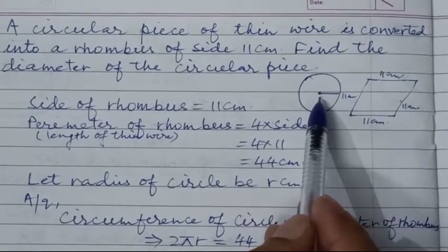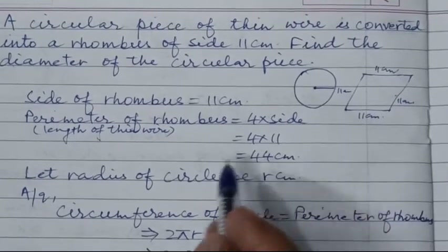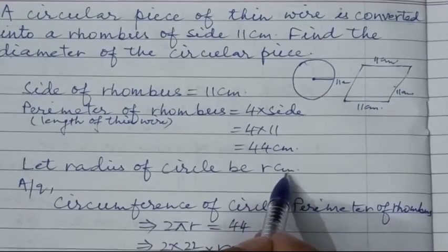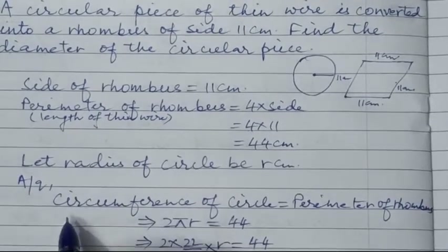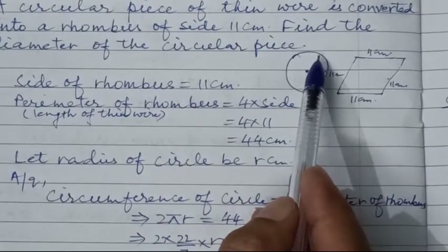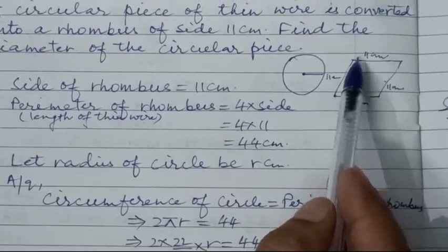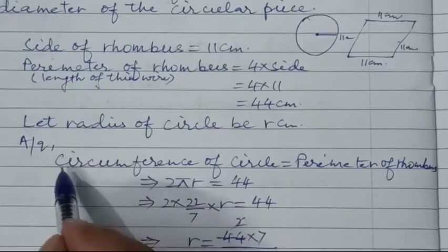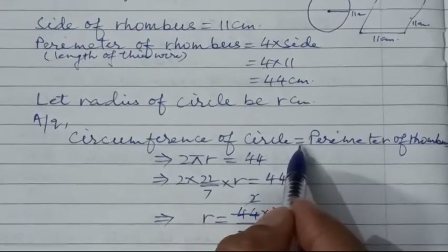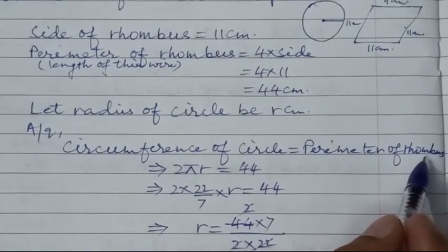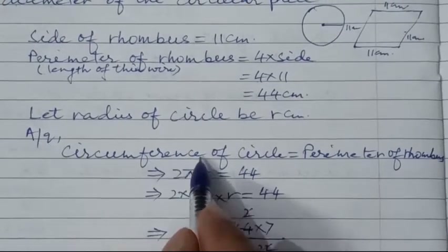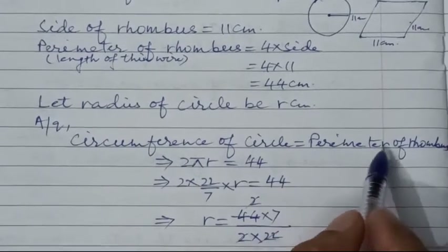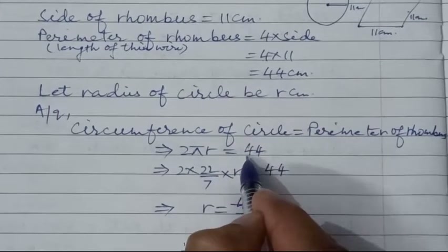Now the wire is converted into circular form. Let the radius of circle be r cm. The length of the circular piece and the length of the rhombus (perimeter of rhombus) will be the same, which is 44 cm.